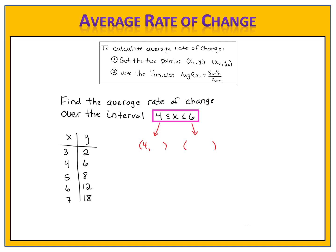We can write each of them in the first position, the x position, of the ordered pairs. Then we refer to our input and output table to get the corresponding output, or y value. When x is 4, we see in the table that y is 6, so our first point is (4, 6). The second x value is 6; we look in the table and we see 6 and 12, so (6, 12) is the second point. We now have our two points.